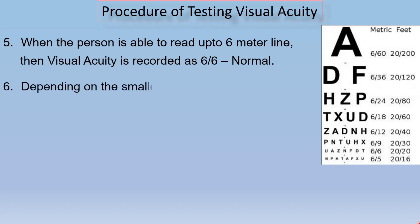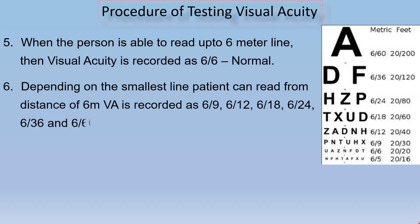Step number 6: Depending on the smallest line the patient can read from a distance of 6 meters, visual acuity is recorded as 6/9, 6/12, 6/18, 6/24, 6/36, or 6/60. If the patient cannot read even the 6/60 line of the Snellen chart, then we move to step number 7.